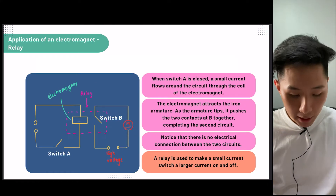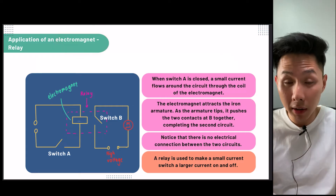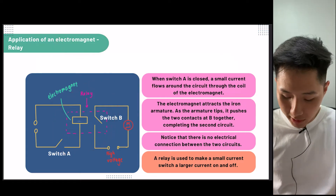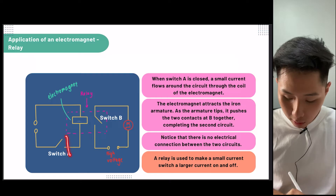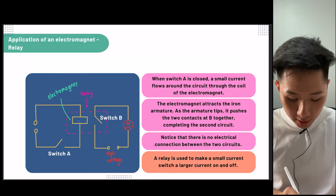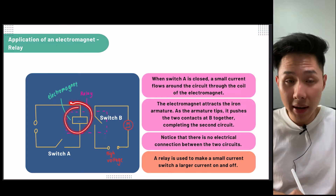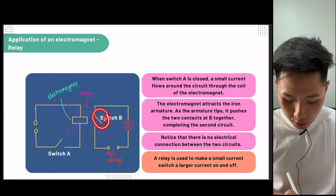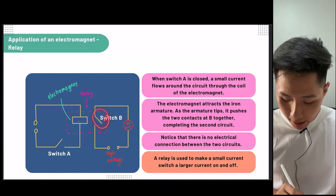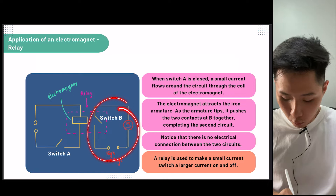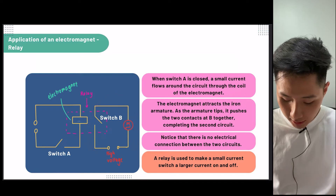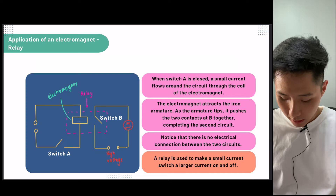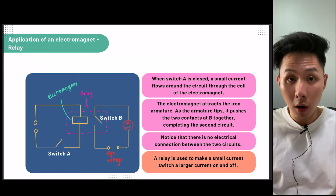One of the applications of the electromagnet, as I talked about in the last video, is the relay. When switch A is closed, a small current flows in the circuit, which causes the electromagnet to magnetize, and it will then attract the iron armature. The circuit B will then be completed. A relay is basically used to make a small current switch a large current on and off.